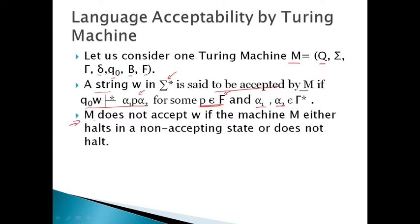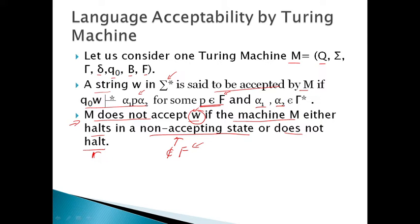An important point is that M does not accept W if the machine M either halts in an unaccepting state, meaning the state in the configuration does not belong to the set of final states, or if the machine does not halt at all — then also you say that the machine is not going to accept string W. Keep this configuration definition in mind.